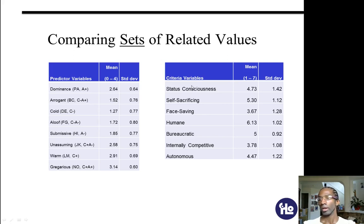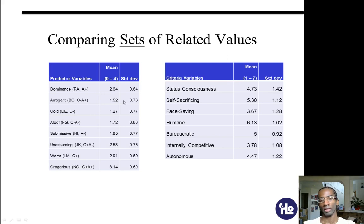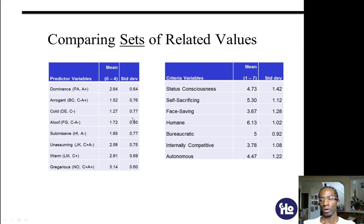You'd run a different multiple regression to compare arrogance to all these guys, so arrogance would be your Y value and all these guys would be your X values. But what if you know that dominance and arrogance are related to each other? Then maybe multiple regressions won't work, or at least won't give you the kinds of results you're looking for, because these two have kind of a cross relationship. That's where canonical correlation comes in, because it accounts for covariances among your variants.